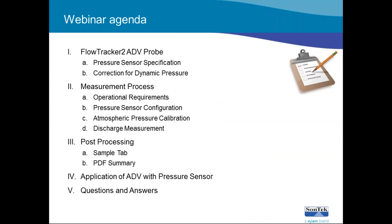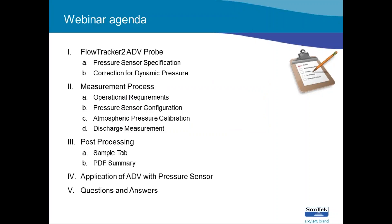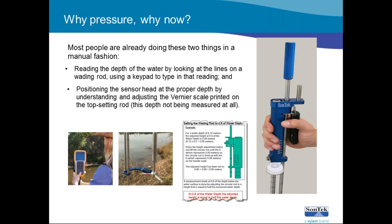A quick overview of what we're planning to discuss today: first, looking at the FlowTracker ADV probe and what we've done to implement it into the system, the actual measurement process, which does slightly differ from your normal top-setting or universal wading rod. Some post-processing features we've added based on user requirements, and how you can apply the FlowTracker in the field. We've also allocated a couple of minutes at the end for questions and answers. This is a pretty straightforward topic, so it'll probably be more like a 30-minute webinar.